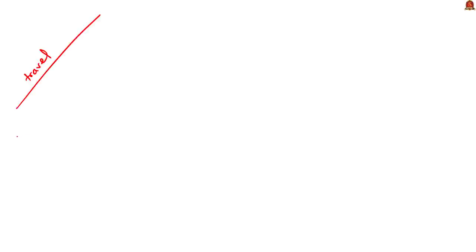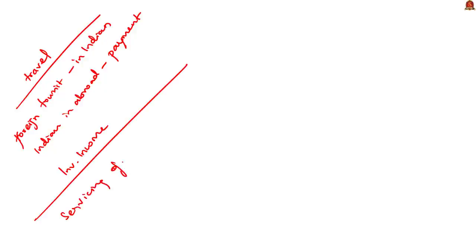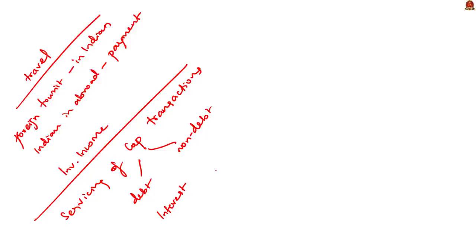Travel represents all expenditure by foreign tourists in India on the receipt side, and it includes all expenditure by Indian tourists abroad on the payment side. Travel receipts largely depend on the arrival of foreign tourists in India during a particular period. Investment income represents servicing of capital transactions — that is, how we service debt and non-debt transactions. These transactions take the form of interest, dividend, and profit. Interest payments represent servicing of debt liabilities, while dividend and profit payments reflect the servicing of non-debt liabilities.